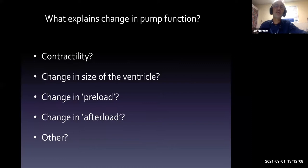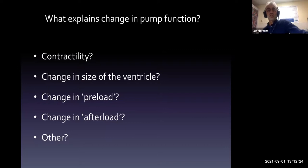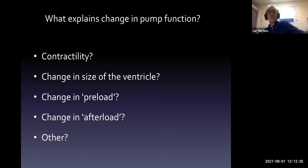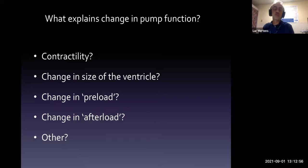So what explains this change in overall pump function of the left ventricle? Is there an acute change in contractility? Is it related to an acute change in preload, since the left ventricle becomes smaller after the reduction in volume that comes with closing the duct? Or is it a change in afterload, since you take a low-resistance system — the pulmonary circulation — out of the circuit by closing the PDA?